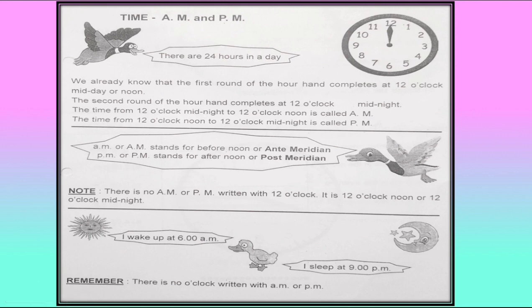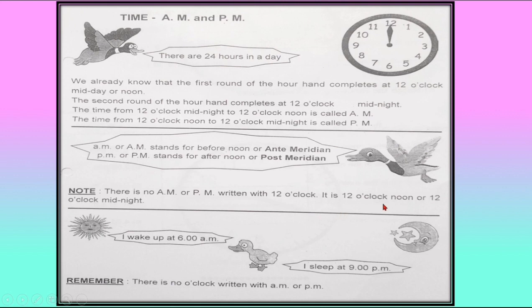Many times we write AM and PM. We know there are 24 hours in a day. The first round of 12 hours completes at 12 o'clock midday or noon; the second round goes from 12 o'clock noon to 12 o'clock midnight. The time from 12 o'clock midnight to 12 o'clock noon is called AM, and from 12 o'clock noon to 12 o'clock midnight is called PM. AM stands for ante-meridiem and PM means post-meridiem. Remember: there is no AM or PM written with 12 o'clock — you say 12 noon or 12 midnight, never 12 PM or 12 AM.